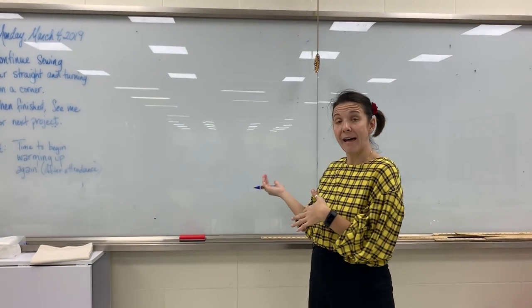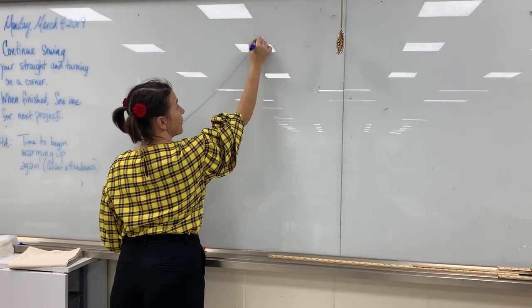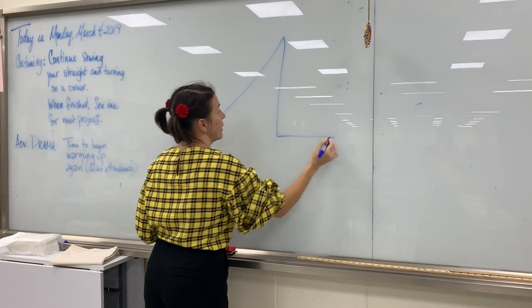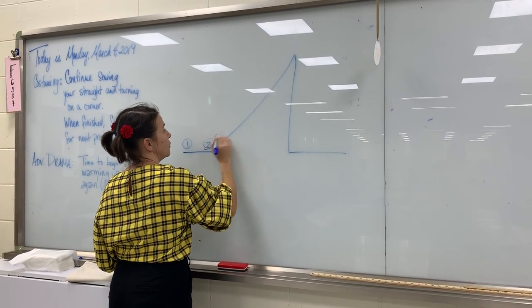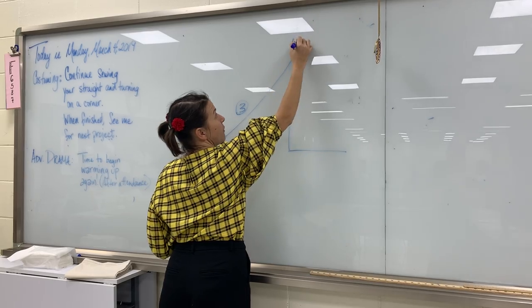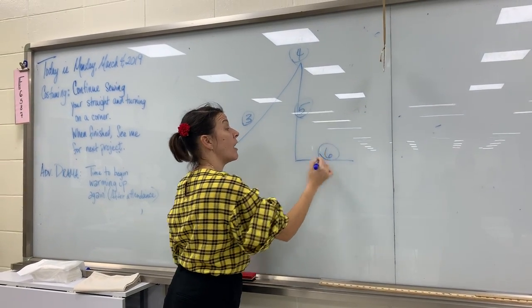We've already done that in class, so again just like in class where we wrote out our plots on our plot structure diagram, you have one, two, three, four, five, and six. You know what they're called.